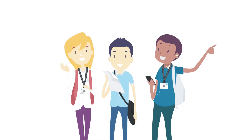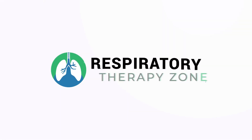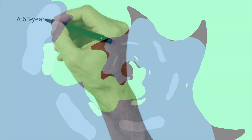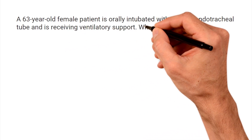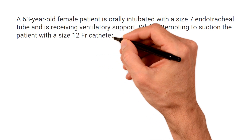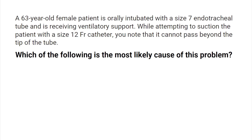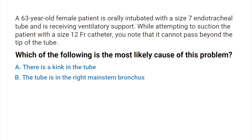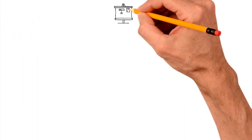This is an important topic for respiratory therapy students, which is why we created this video to help by breaking down a sample TMC practice question on this topic. A 63-year-old female patient is orally intubated with a size 7 endotracheal tube and is receiving ventilatory support. While attempting to suction the patient with a size 12 catheter, you note that it cannot pass beyond the tip of the tube. Which of the following is the most likely cause? A) There is a kink in the tube, B) the tube is in the right mainstem bronchus, C) the suction catheter is too short, or D) the suction catheter size is too large.